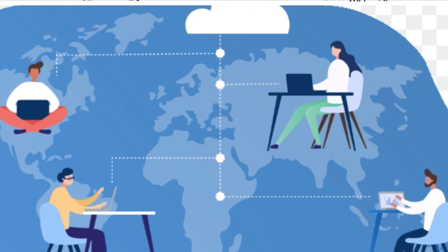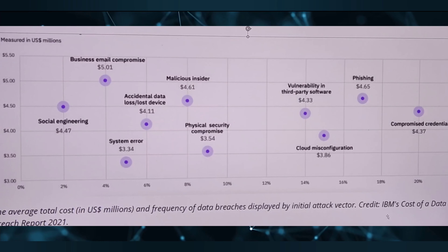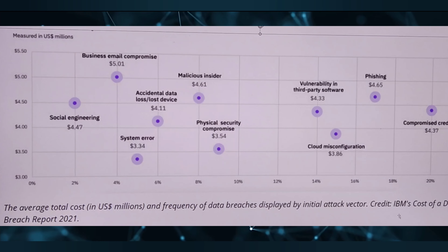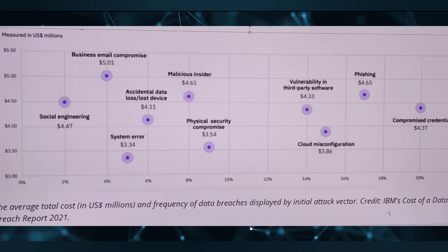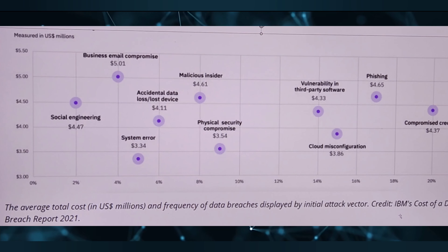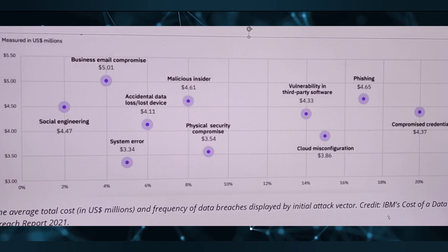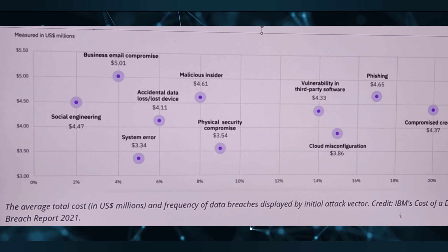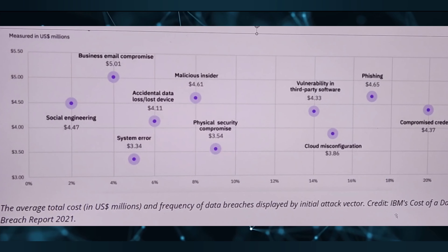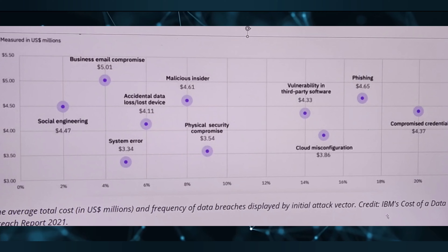The same study found that the pandemic and the shift to remote work made breaches worse. In breaches where remote work was a factor, the average cost was $1.07 million dollars higher than breaches involving non-remote work settings. Additionally, employers with a predominantly remote workforce took on average 58 days longer to contain breaches than their non-remote counterparts.